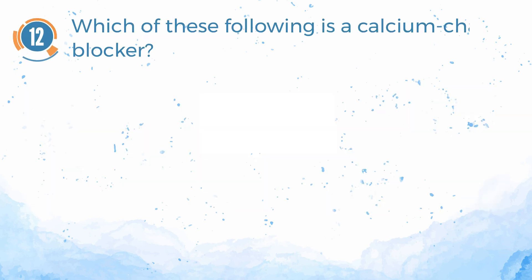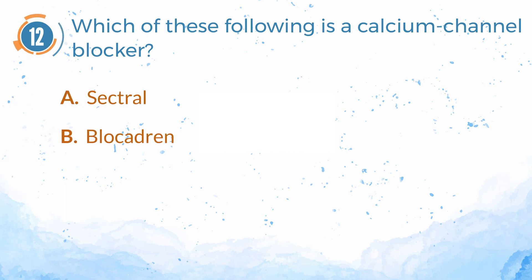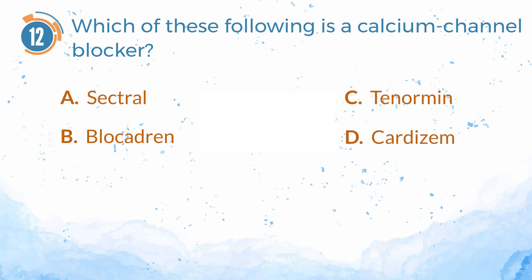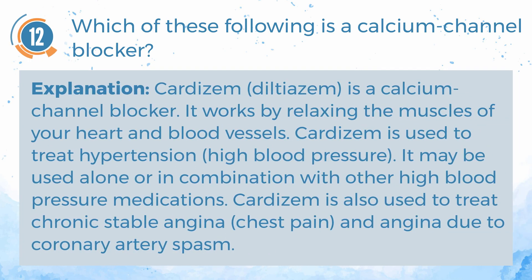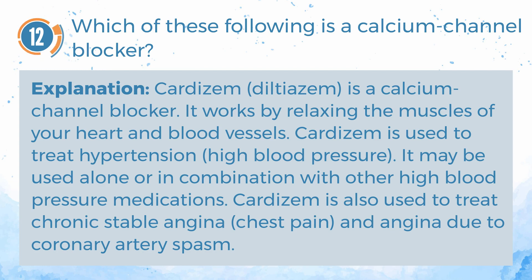Number 12. Which of the following is a calcium channel blocker? A. Sectral. B. Blockadrin. C. Tenormin. D. Cardizem. The answer is D. Cardizem (diltiazem) is a calcium channel blocker. It works by relaxing the muscles of your heart and blood vessels. Cardizem is used to treat hypertension (high blood pressure), may be used alone or in combination with other medications, and is also used to treat chronic stable angina, chest pain, and angina due to coronary artery spasm.